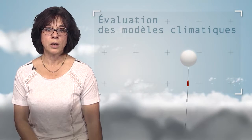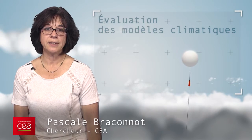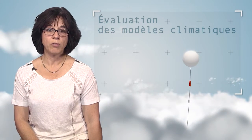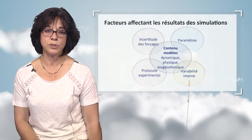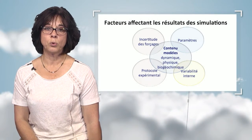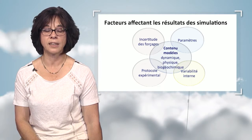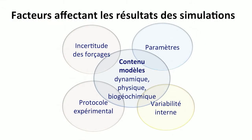In this video, we're going to discuss how we can ensure credibility of the models used for the projection of future climate. There are several factors that will impact the results of simulations: the content of the model, the way the equations are represented, dynamics, physics, all the interactions, biogeochemical interactions, but also parameters that must be defined and adjusted in order to achieve correct interactions between all the elements. Small variations in the parameters may have an impact on the final results.